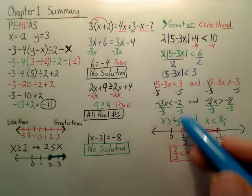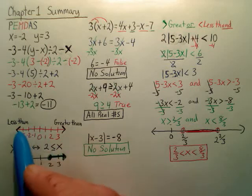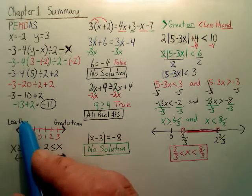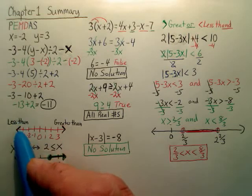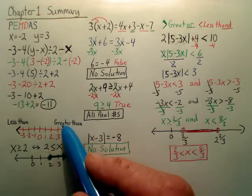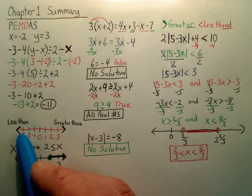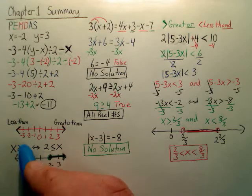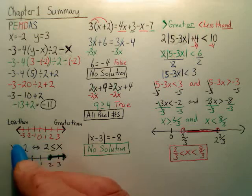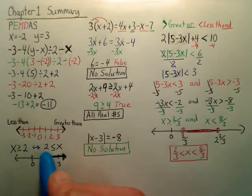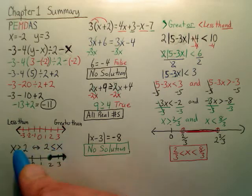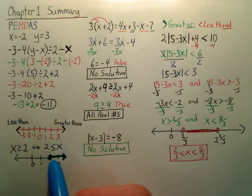Before we do this absolute value problem over here, let's look at this. Hopefully you realize this is a number line. The less than sign looks like that at the end of the less than number line. The greater than sign sits right over here. The less than always looks like an L as well. Also, if you have x is greater than or equal to 2, this is the same thing, just written backwards. These are the same, just written backwards.